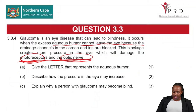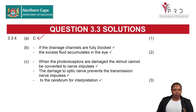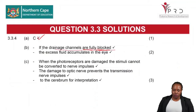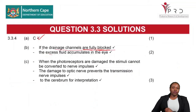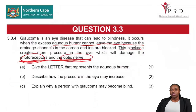Question 3.3.4a asks for the letter representing the aqueous humor — that is Part C. Question 3.3.4b asks how pressure in the eye may increase: if the drainage channels are fully blocked, excess fluid accumulates in the eye and increases pressure. Read the information in the extract carefully — sometimes the answers are right there. Read your extract two or three times to fully understand what is being asked.